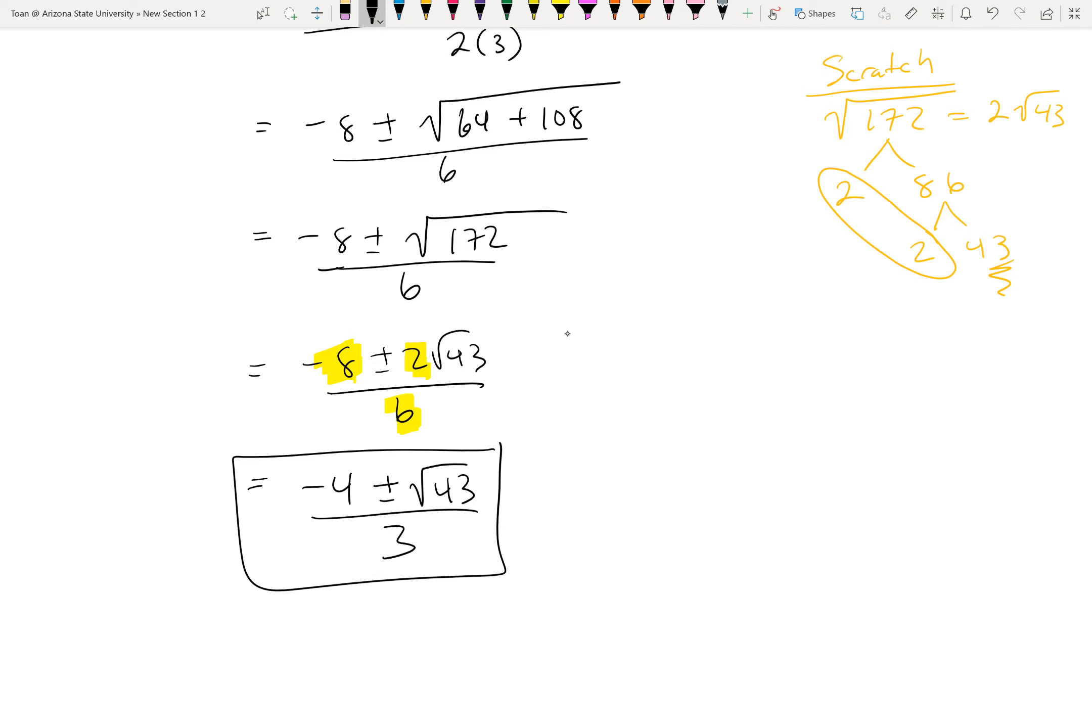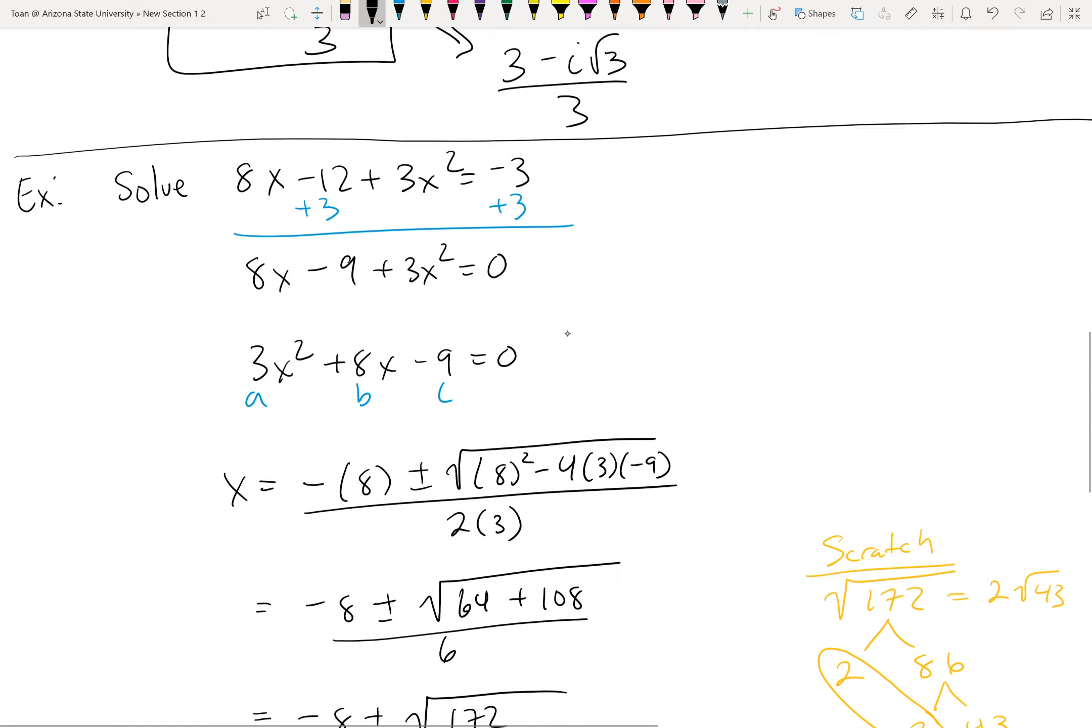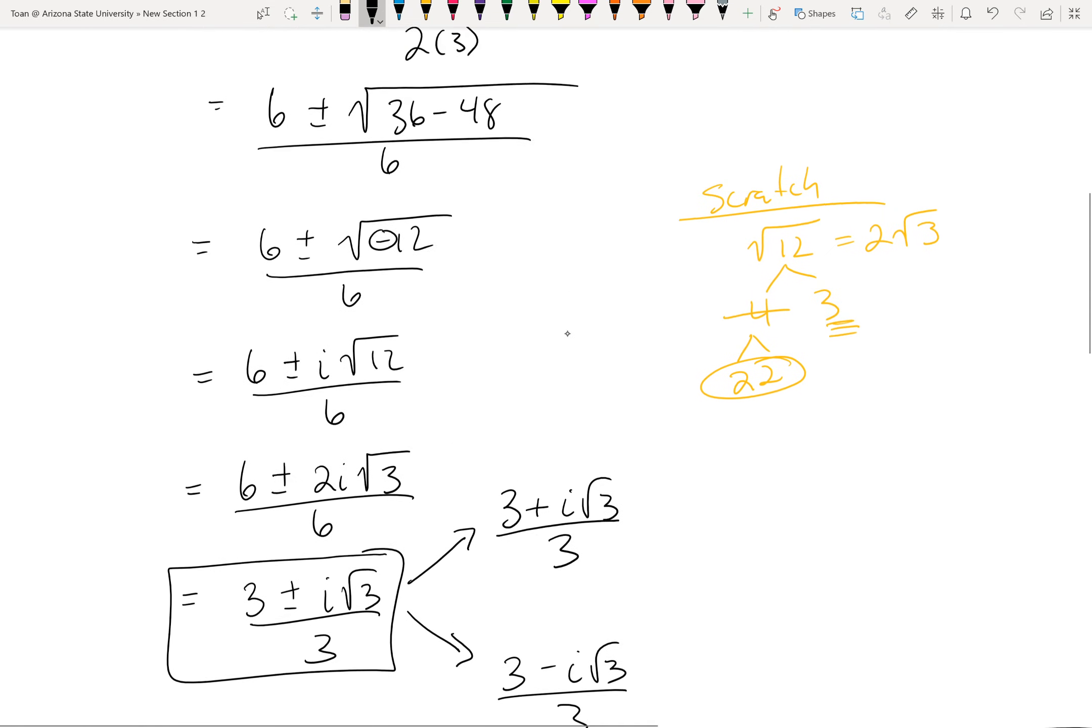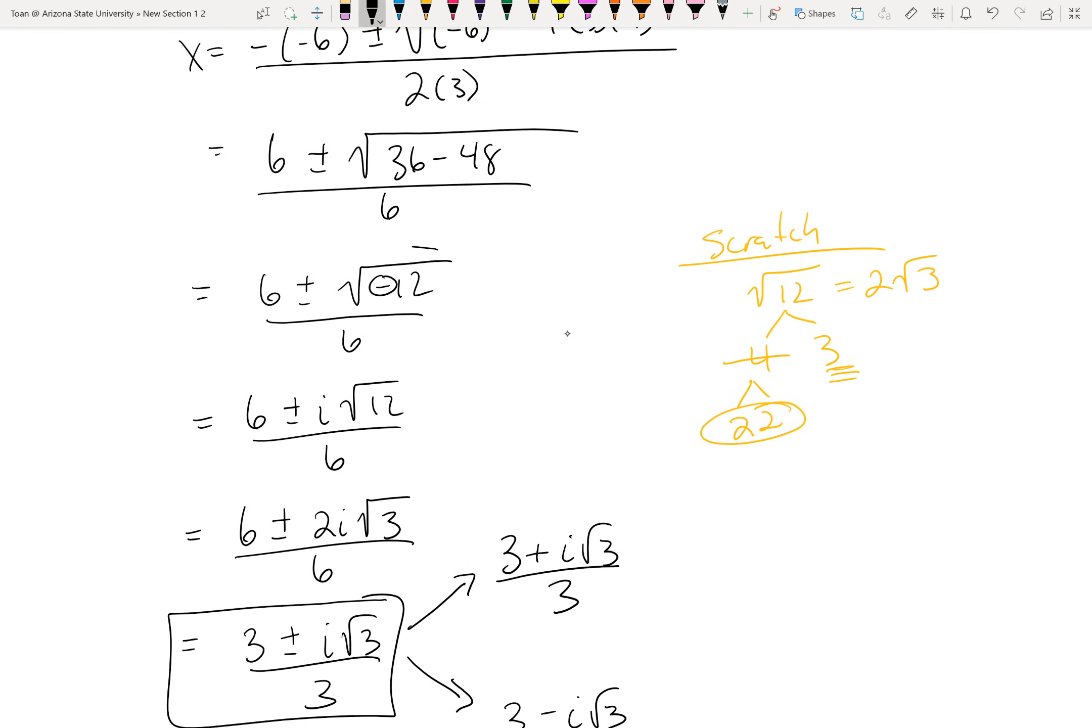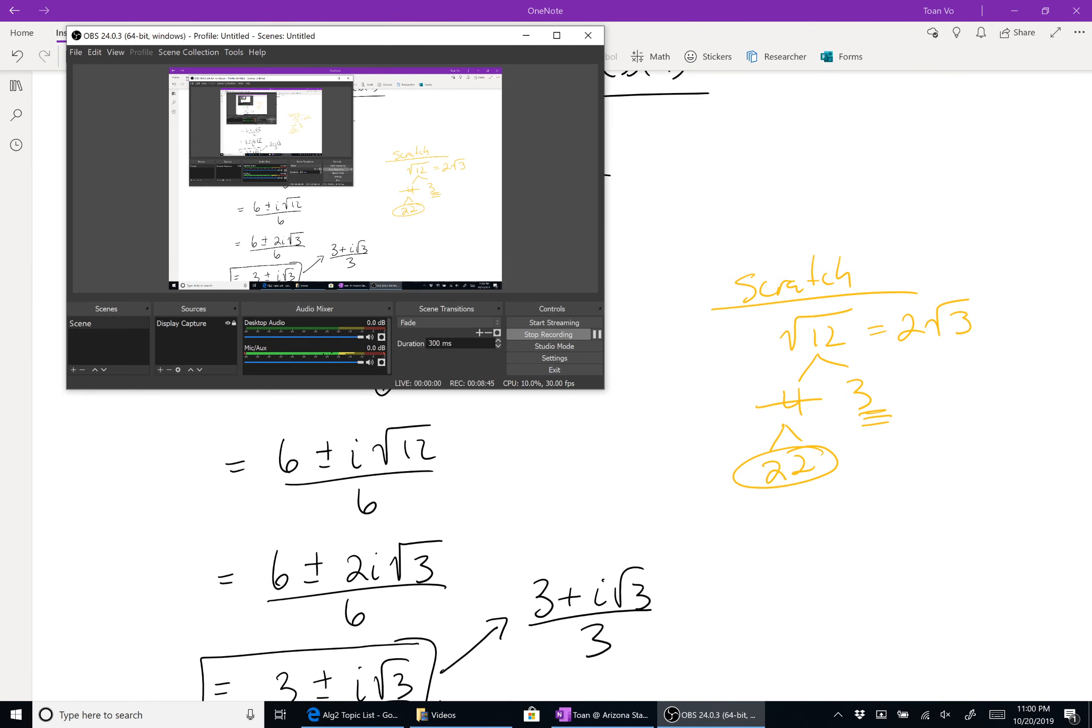So this topic here is basically just practicing the quadratic formula but with one extra layer. If at any time you have to take the square root of a negative number, all you're doing is pulling out that negative and putting an i there. So that's all you have to do with this topic. Thanks.